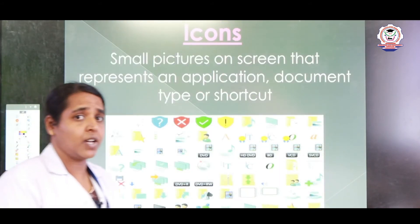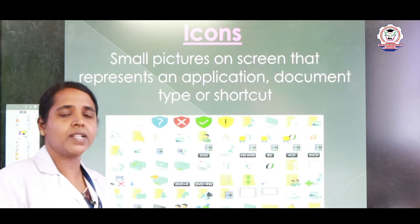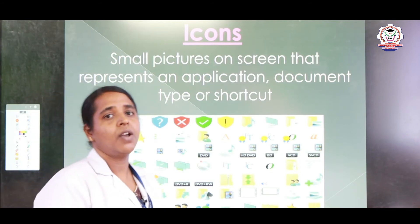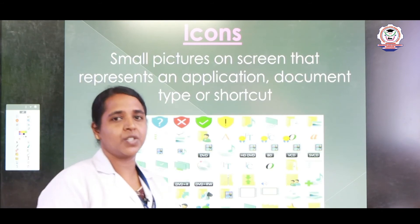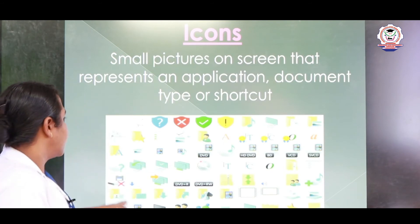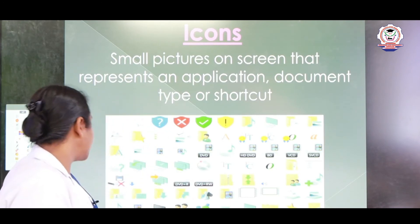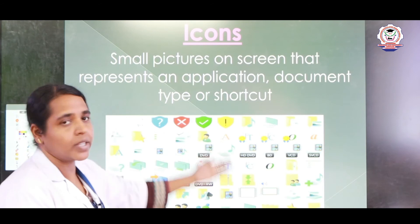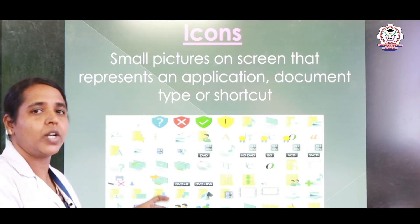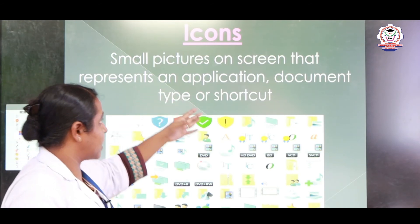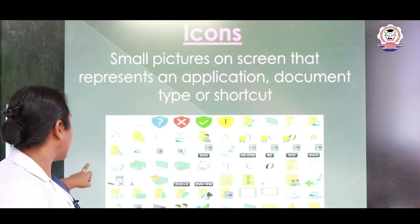Next we can see icons. What are icons? Icons are application software. For example, in your mobile you can see many application software — Facebook, YouTube, Instagram, or WhatsApp. These are all application software. Folders, search, music, videos, and documents are all indicated by small pictures on the screen. That small picture is called an icon — small pictures on a screen that represent an application, document type, or shortcut.